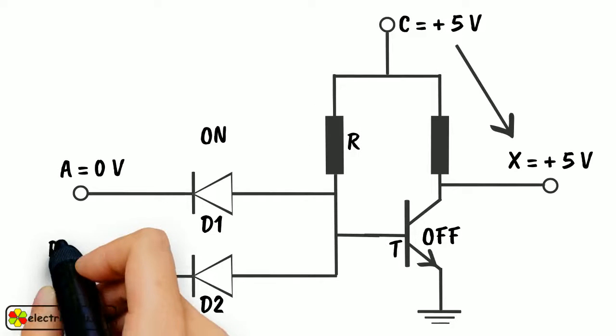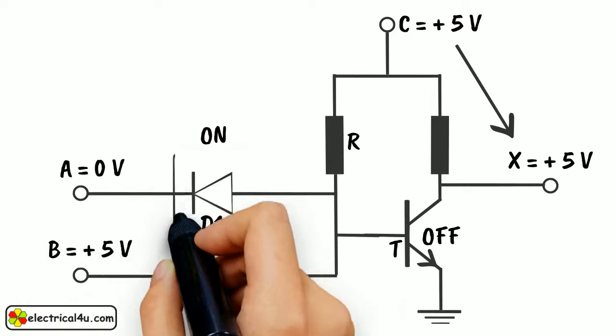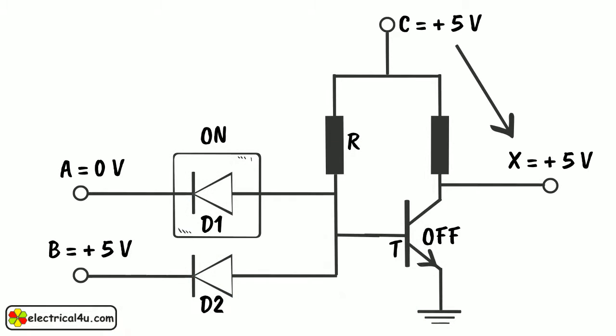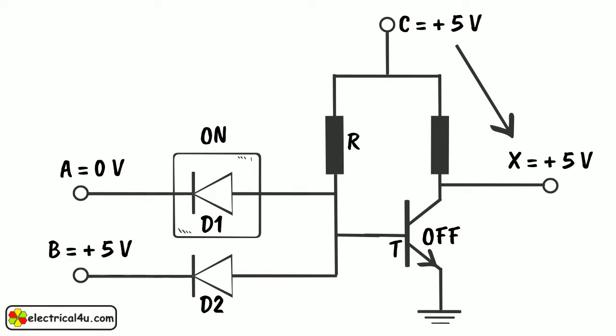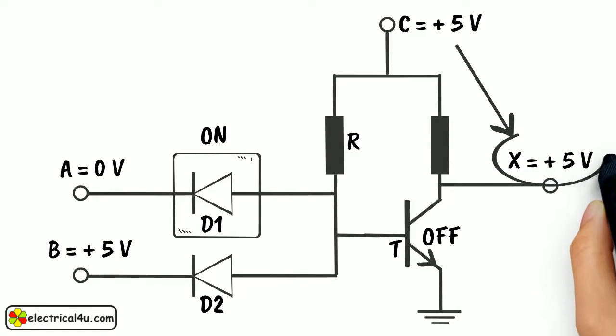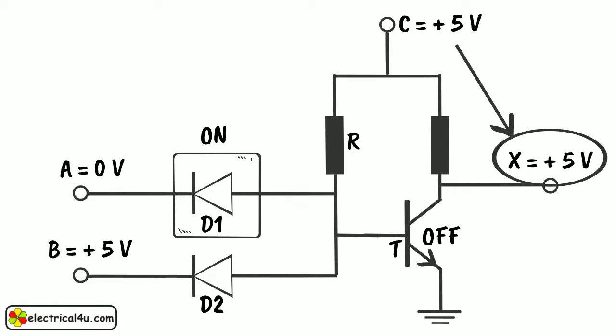Now, if either of diode D1 or D2 is applied with 0V, the same thing happens, as in these cases also the supply voltage gets passed to the ground through either forward biased diode. In those cases also, the output will be logical HIGH or 1.